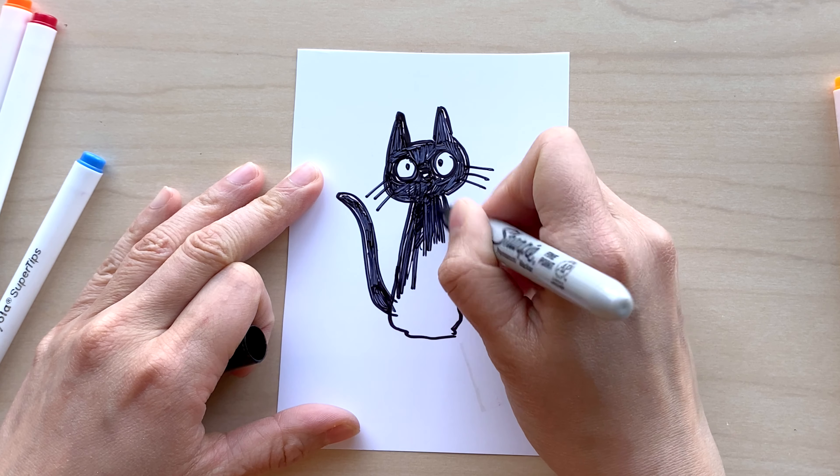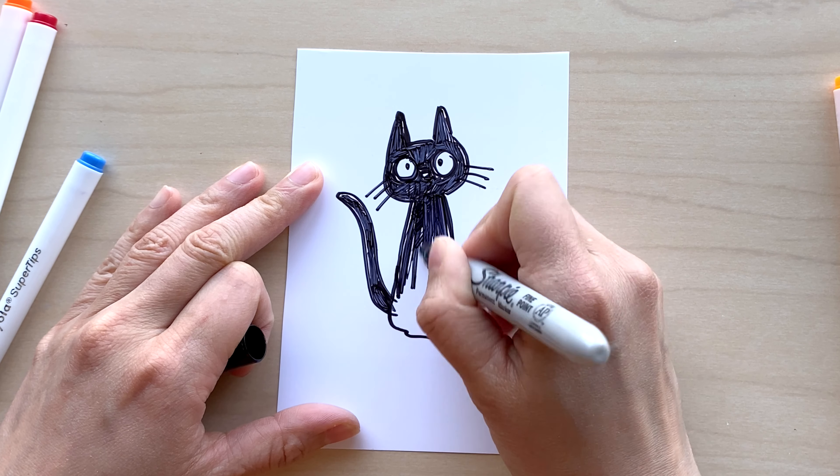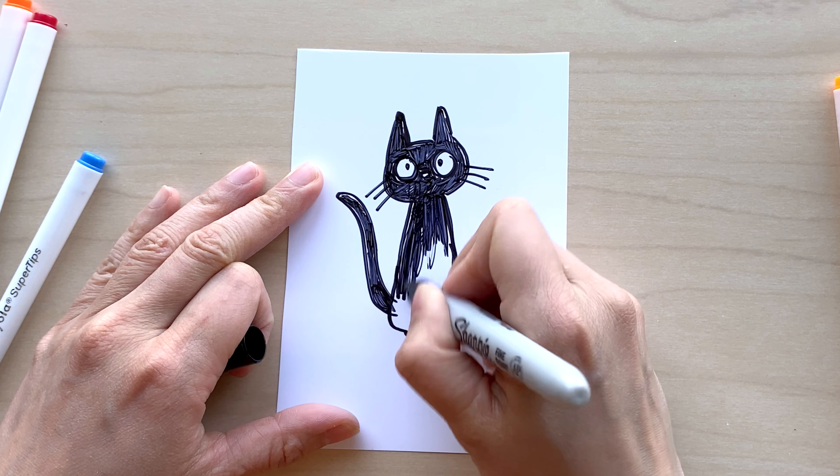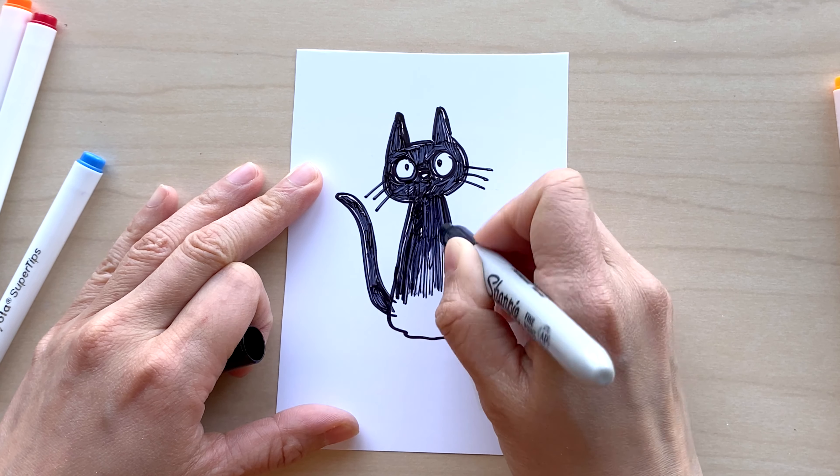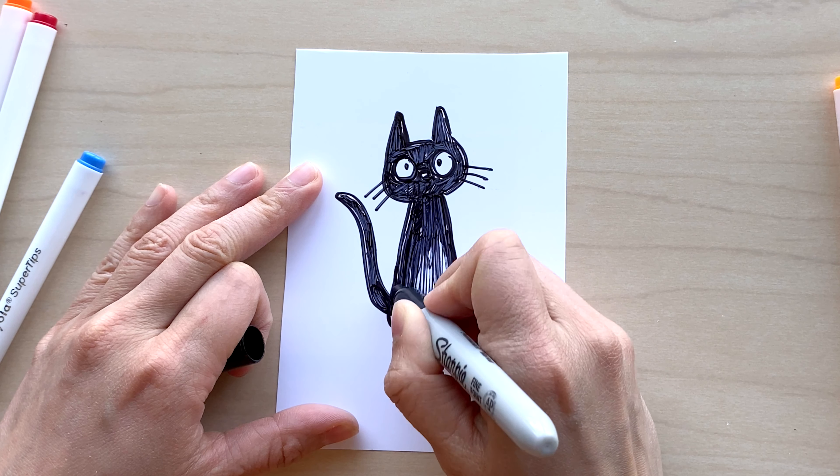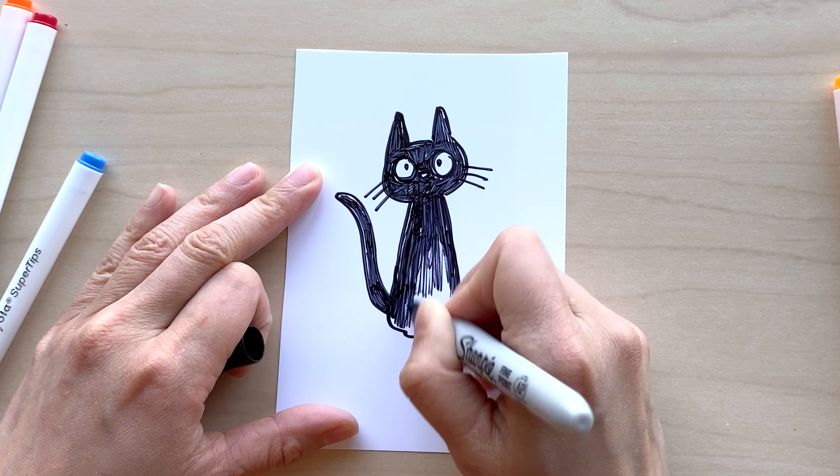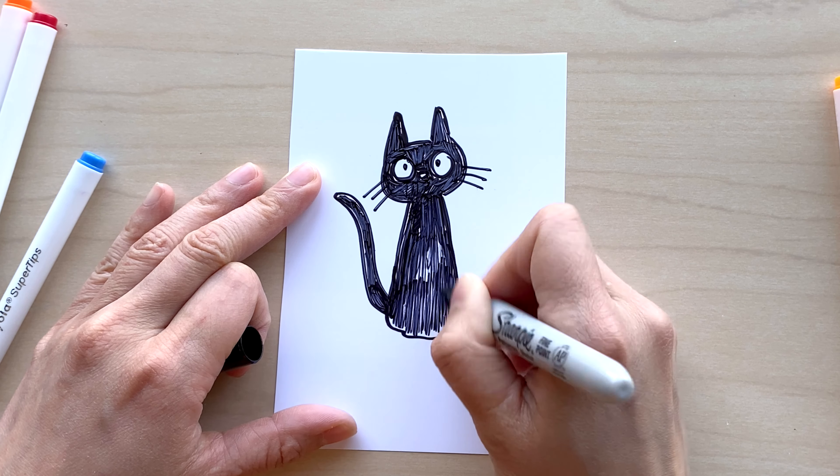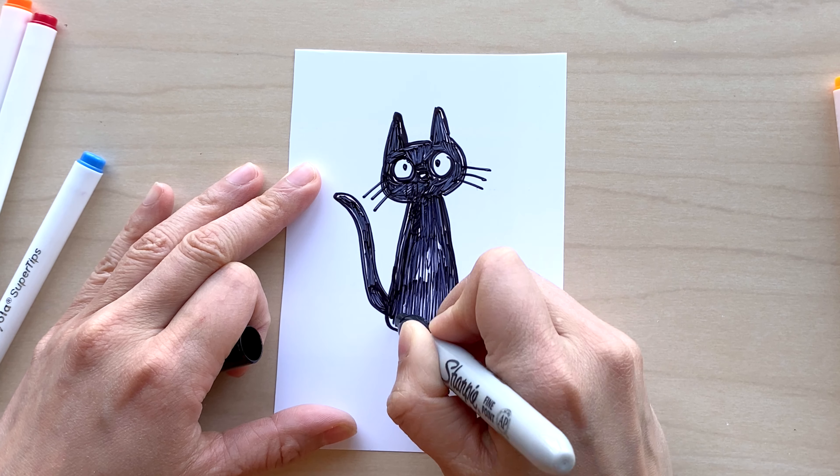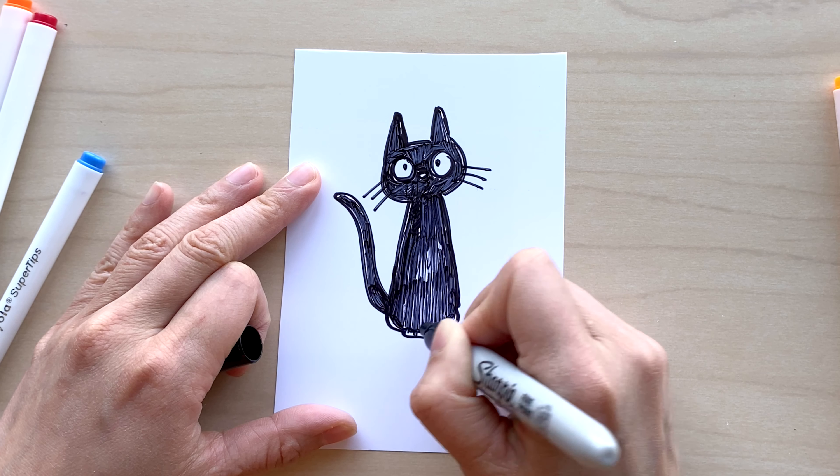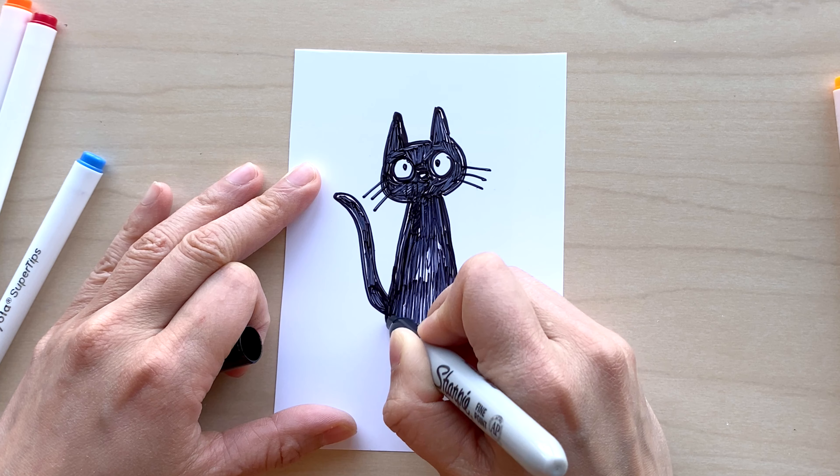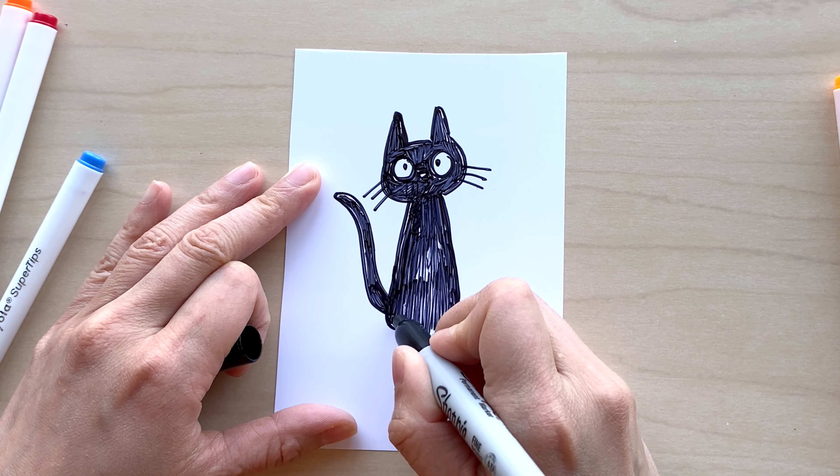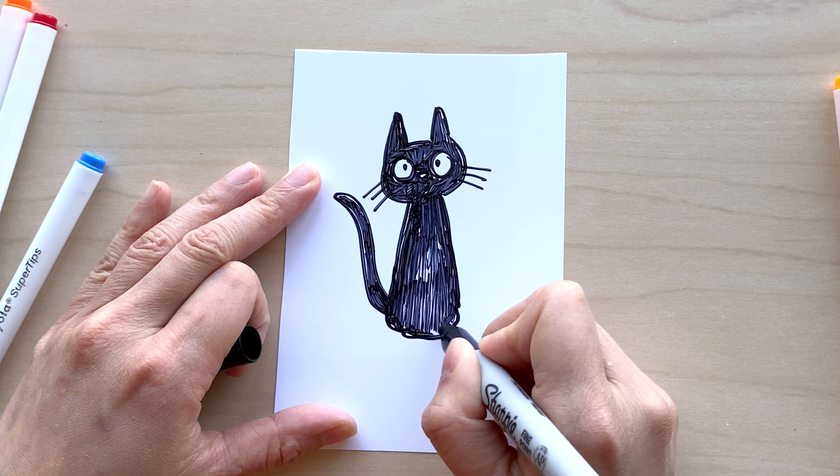So here I'm just using my Sharpie marker to color in Jiji entirely in black. And as I mentioned before, you can also make Jiji into a different color of your choice as well. Another option is to add on other accessories besides a bow or bow tie. You could also do like a scarf for Jiji if you like, or like a bow on the top of Jiji's head. So there's a couple options.